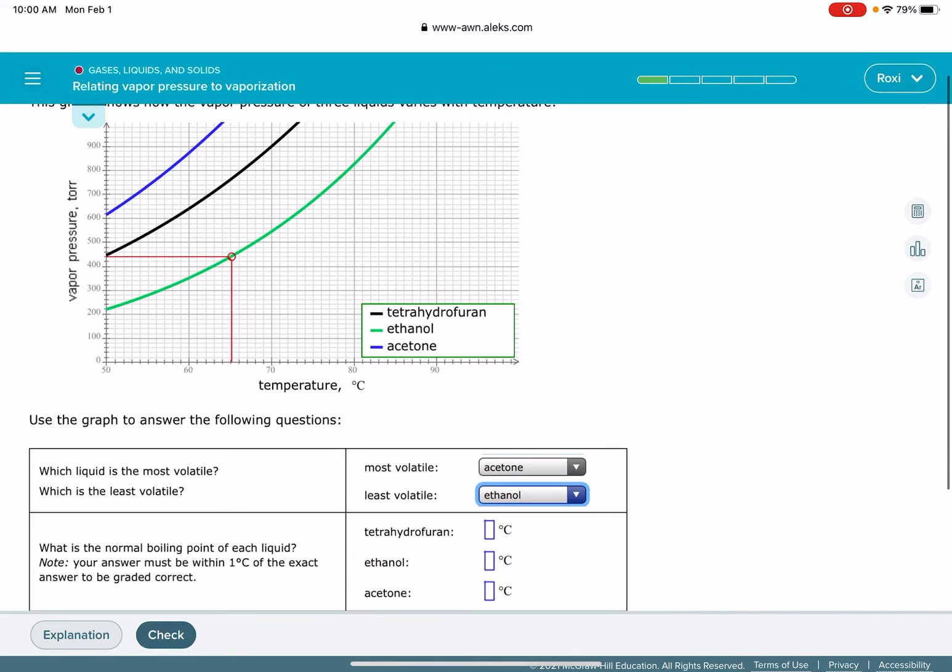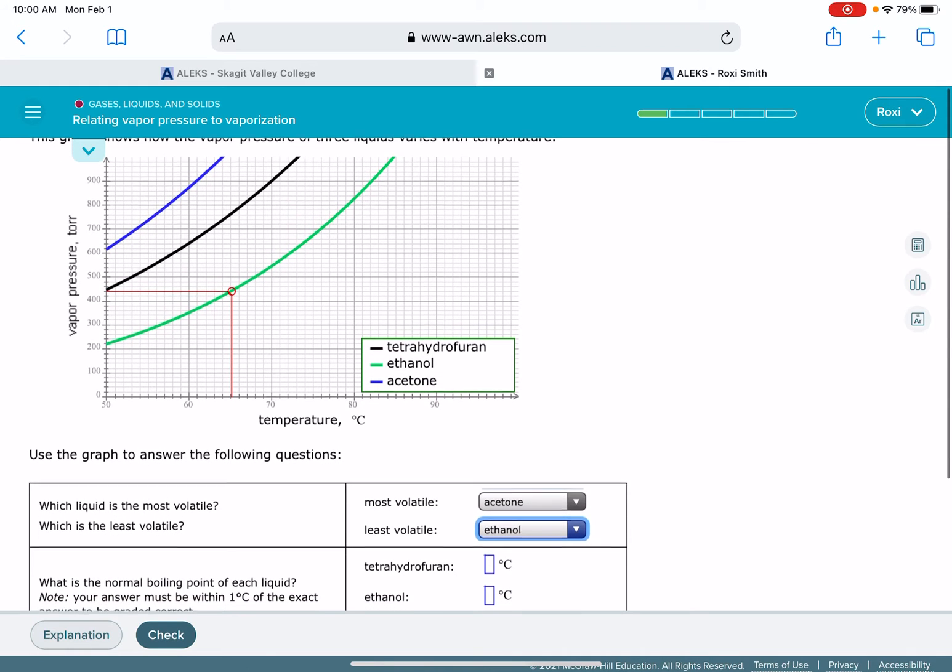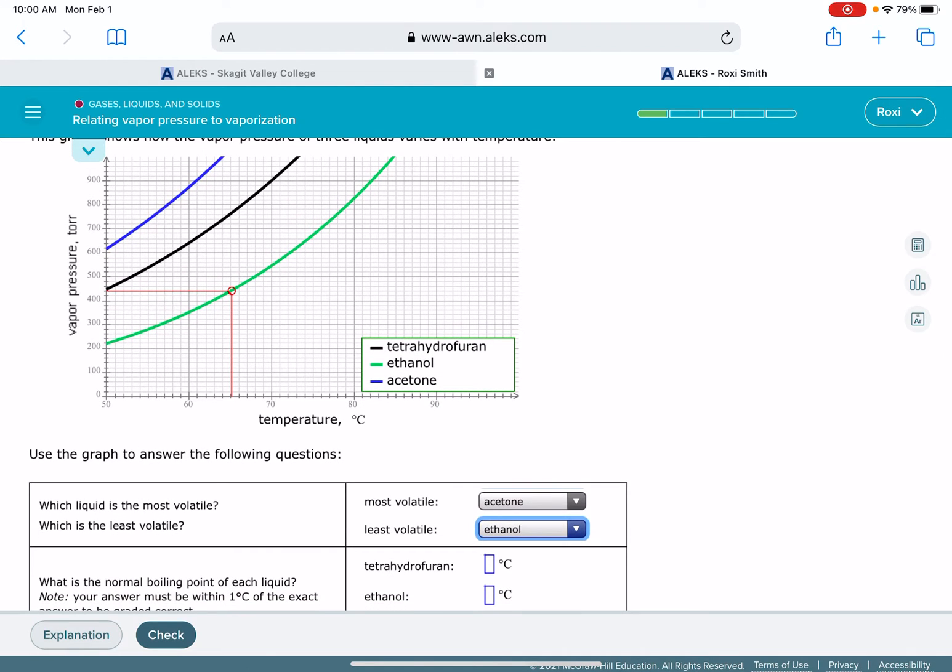The second question asks us to pick the normal boiling point for each liquid. The normal boiling point is the temperature when the vapor pressure is equal to one atmosphere or 760 torr. So to find the boiling point, we have to find the temperature that corresponds to 760 torr.